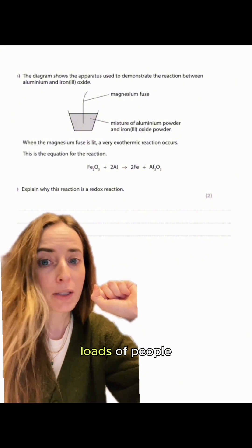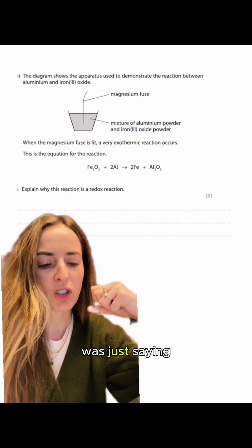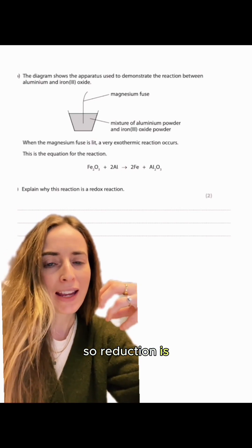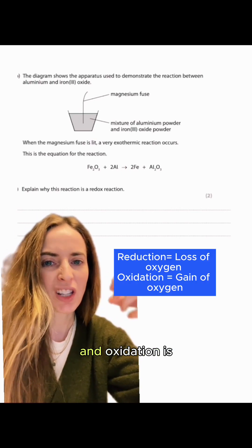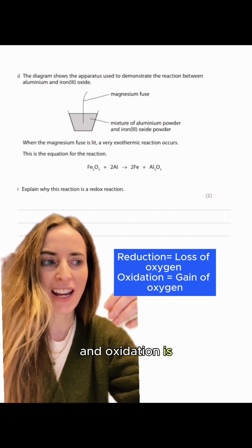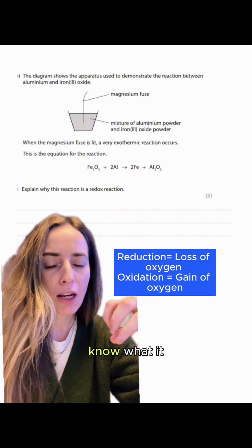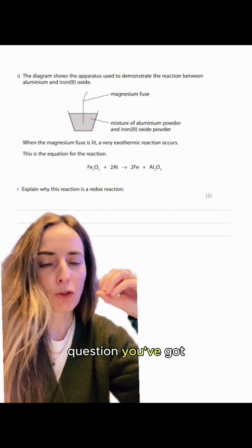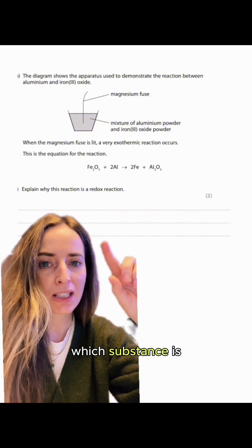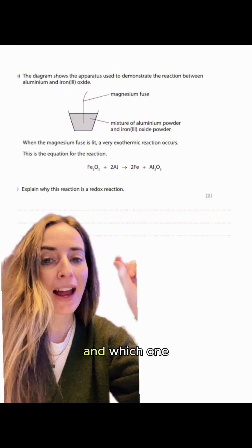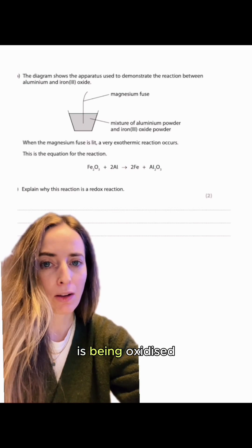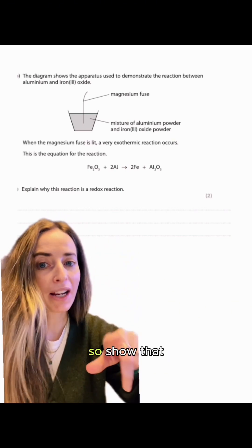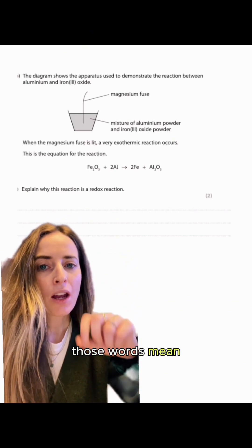The first common mistake that loads of people made was just saying what a redox reaction is — that reduction is the loss of oxygen and oxidation is the gain of oxygen. That's great, but for this question you've got to identify which substance is being reduced and which one is being oxidised, specify that, and say why — show that you know what those words mean.